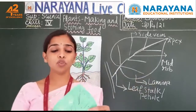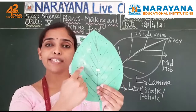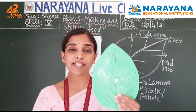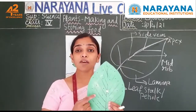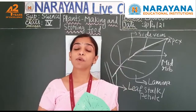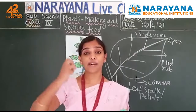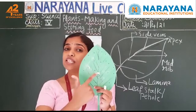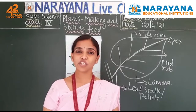Now let us come to one more part of the leaf — the stomata. Can you see these tiny pores? These are called stomata. Stomata allow the entry of gases into the leaf. For preparing food, plants require carbon dioxide, which they take from the air. Carbon dioxide enters into the leaf through these tiny pores called stomata.